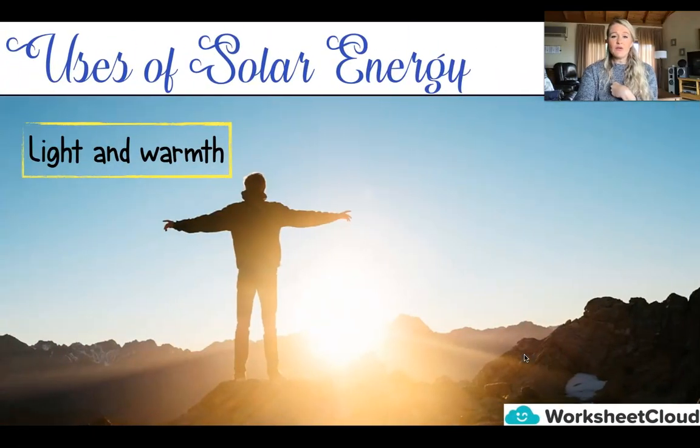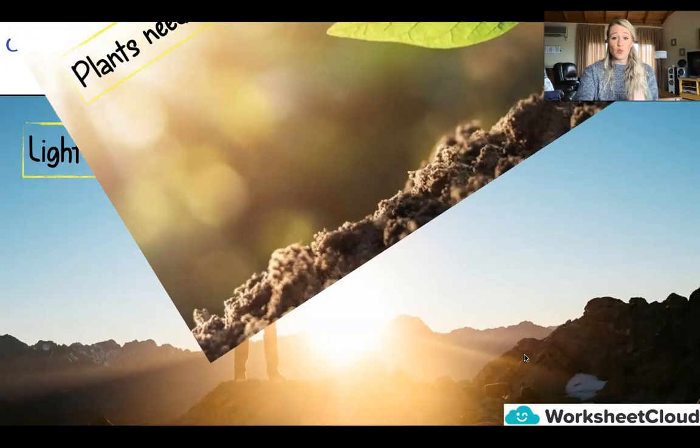Now, if we have a look at the different uses of solar energy. So we need solar energy. And I'm going to continuously refer to energy from the sun as solar energy, because it is the more accurate and scientific word that we use to describe energy from the sun. So we first use it for light and warmth. So obviously, during the day, we needed to see and lighten up our earth, as well as to warm our earth. And obviously, in different parts of the earth, it's a lot warmer and cooler in certain places. But we definitely need it for light and warmth.